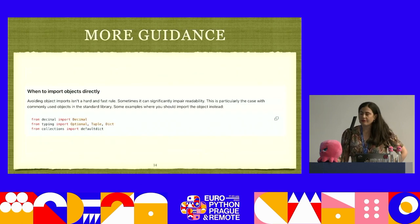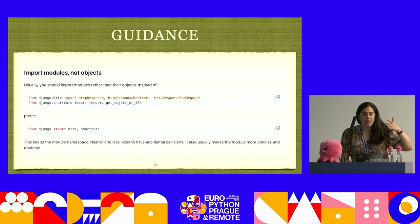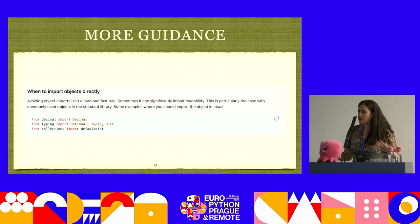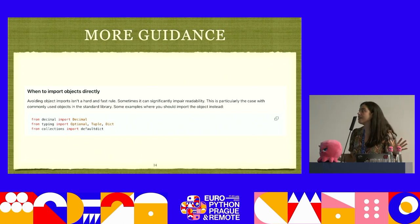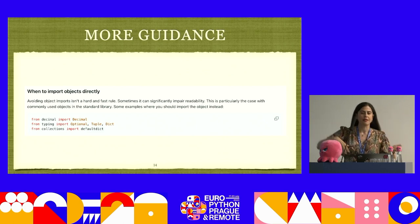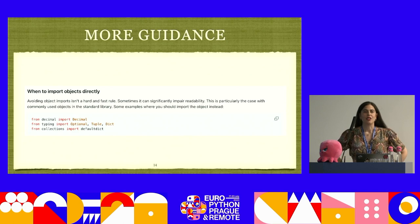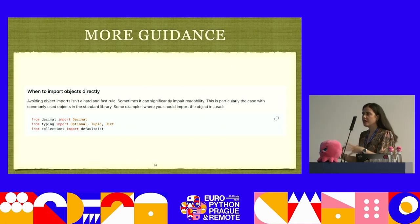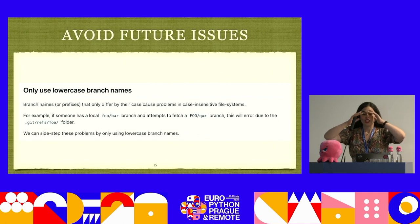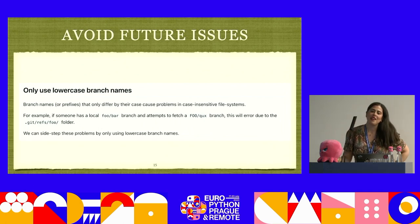Convention six: no-guidance — knowing when a convention doesn't apply. Not all conventions work all the time. For example, 'import modules not objects' has exceptions: if it's a standard library object or similar, it's still fine to import the object directly. You can create nuanced conventions with examples, so everybody is happy. You don't have to give one rigid direction — you can detail it and provide examples.